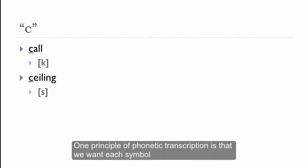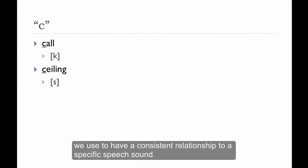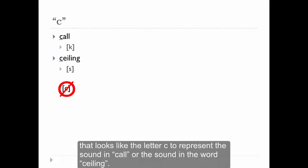One principle of phonetic transcription is that we want each symbol we use to have a consistent relationship to a specific speech sound. Because the letter C doesn't do this in English, we don't use the phonetic symbol that looks like the letter C to represent the sound in call or the sound in the word ceiling.